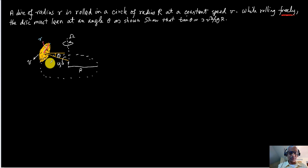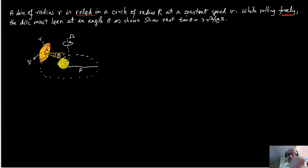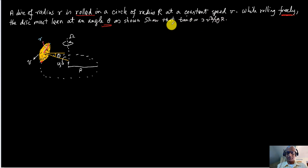It's rolling freely — you're not pushing it. Gravity is the only external force, plus friction at the contact point because it rolls without slipping, and a normal force vertically up from the surface. In the case of a funnel, the lean angle is important, so we need to find what this angle will be. The answer is given and we need to show it.